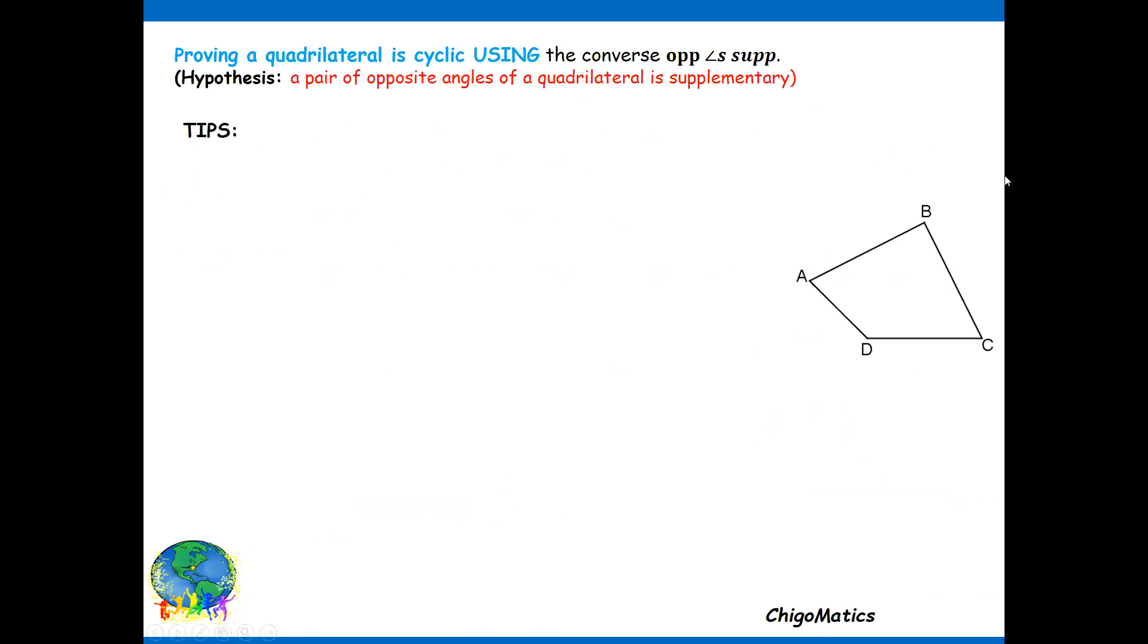Now if we look at the diagram, ABCD is the quadrilateral given. There's no much information we can deduce from there, but the only thing that you need to know is to show the hypothesis of this converse theorem. The starting point is to look into the quadrilateral, and when I say look into the quadrilateral, that means the quad you want to demonstrate is cyclic.